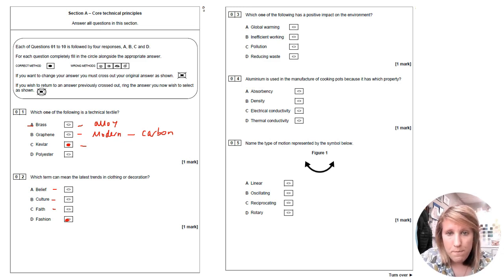Which one of the following has a positive impact on the environment? So these questions are really simple, but if you read them wrong, if you read it as negative impact or something like that, just make sure you read the question really carefully. So which one has a positive impact? Well global warming doesn't have a positive impact, inefficient working doesn't and neither does pollution, so it's quite obviously reducing waste. I feel like they're trying to catch you out, so make sure you read it carefully.